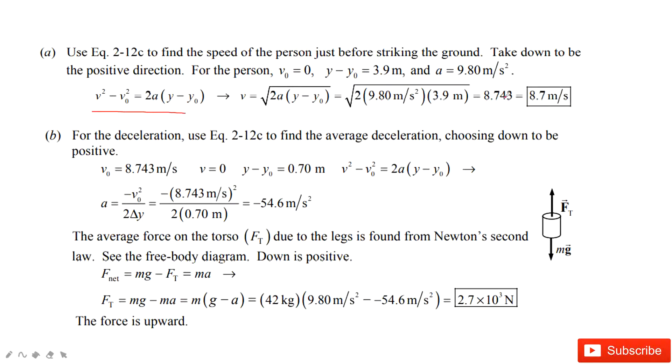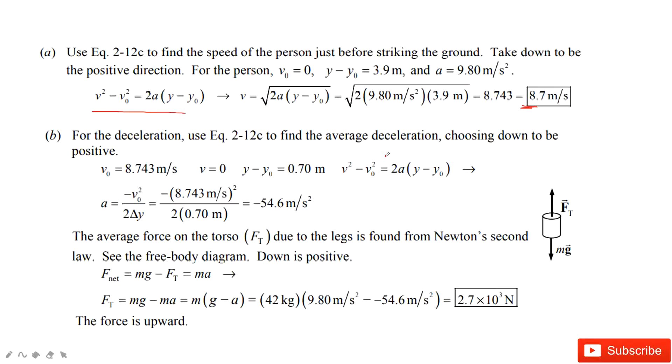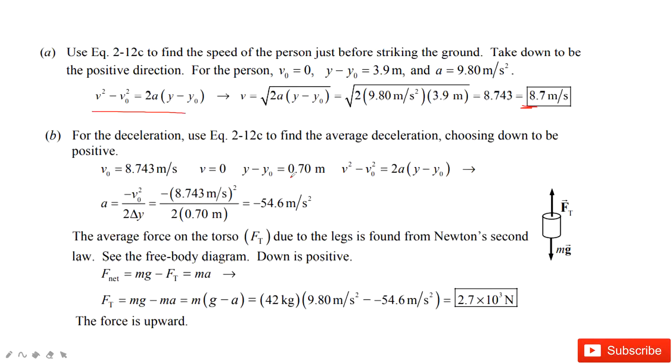So first part, we can get the v_2 there using our favorite equation, this one. After we get this equation, we can find the acceleration a_2 there. So v_2 is given, v_3 is zero, and displacement is given. So in this one, very easy, we can get the acceleration. This acceleration pointing down because this person needs to slow down, right? It's correct.